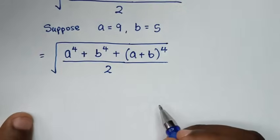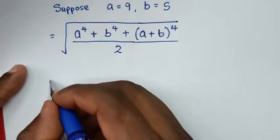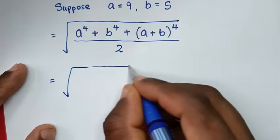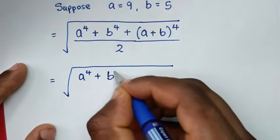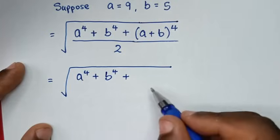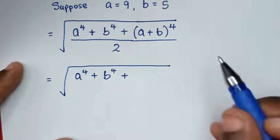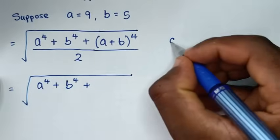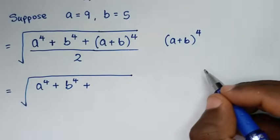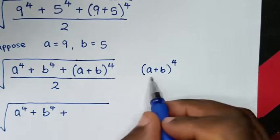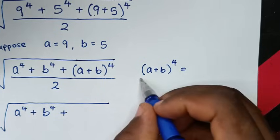Then in the next step, our expression here will be equal to square root of a to the power 4 plus b to the power 4 plus (a+b) to the power 4. We will use the binomial theorem to expand (a+b) to the power 4, so as to get the coefficients.